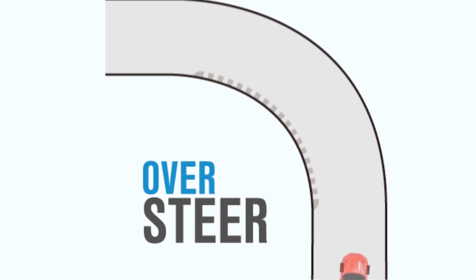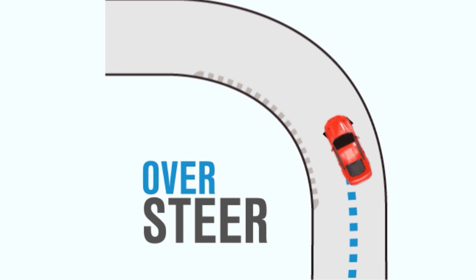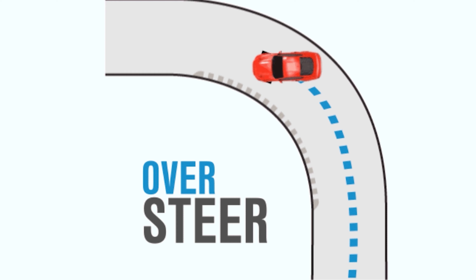Oversteer is mostly found in rear-wheel-drive cars. When you speed up, you can see the rear tires begin to slip. If you have the steering wheel turned, the tires will slip in that direction — this can become understeer at low input, or oversteer when the rear breaks away.